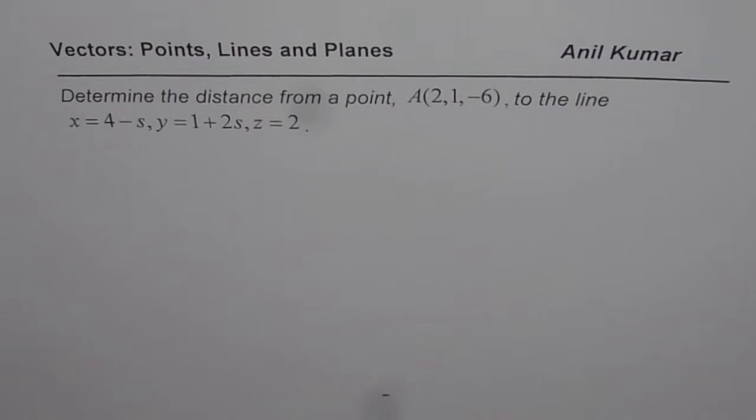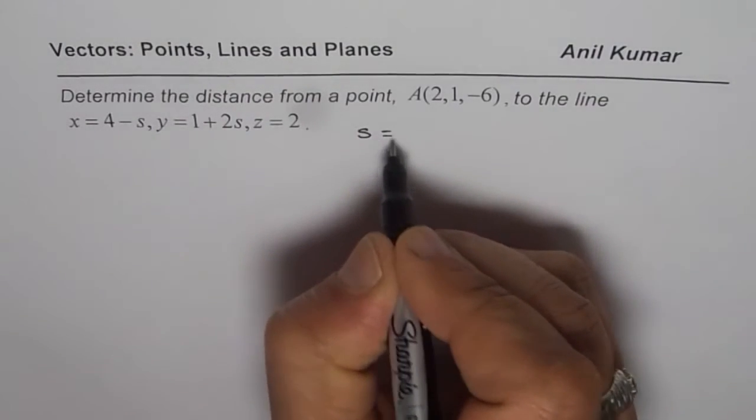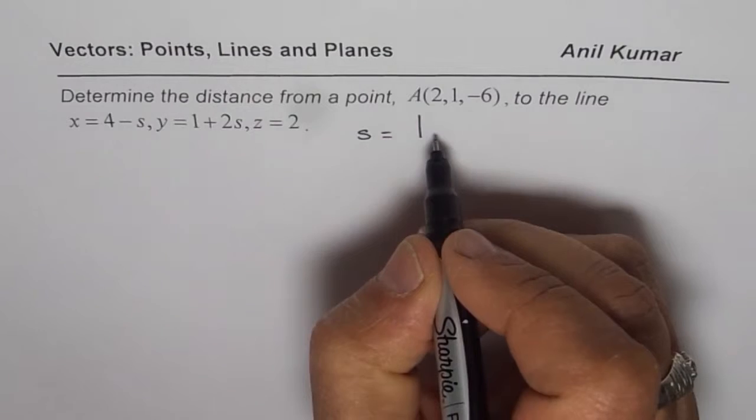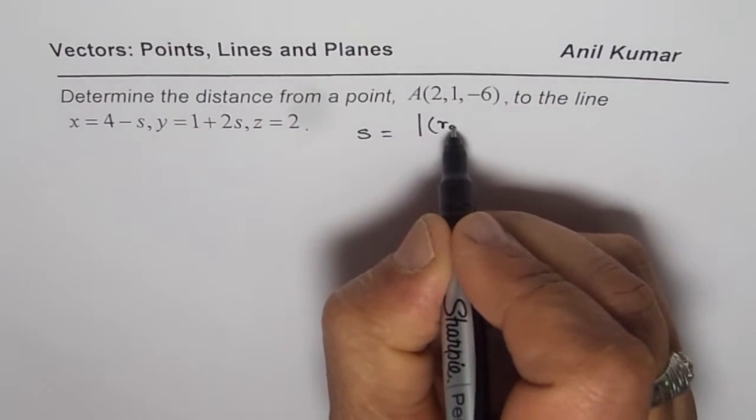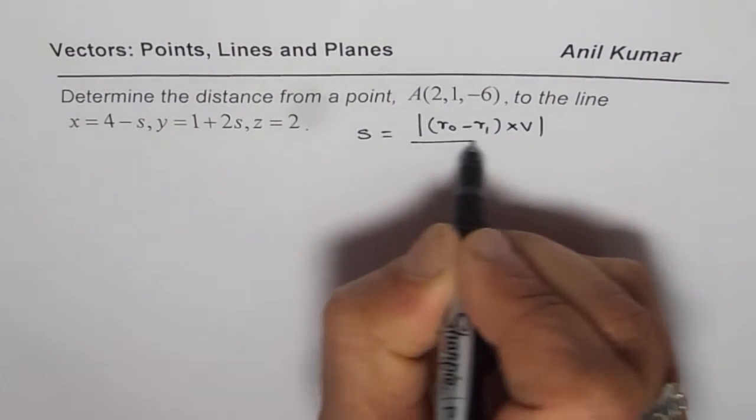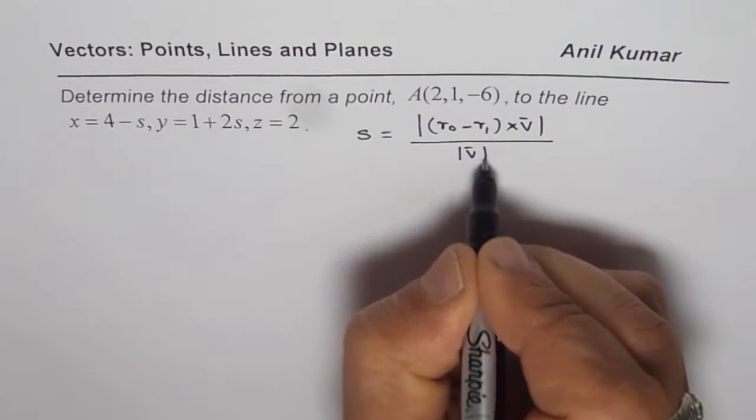Now I hope you remember that for finding distance between a point and a line, we should always use cross product. And the formula is s, the distance between the two, is absolute value of cross between... let me write down the formula first, and then we will actually explore it. Magnitude of this.